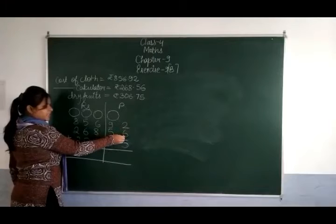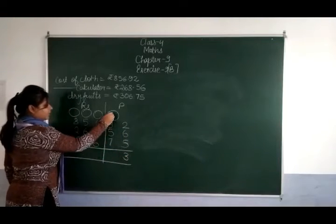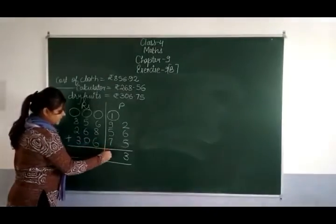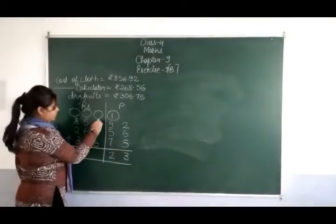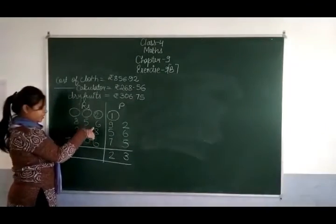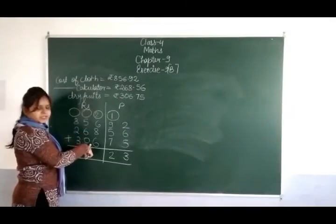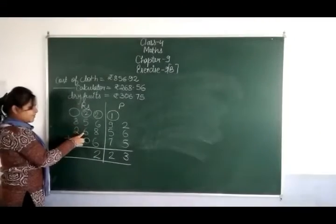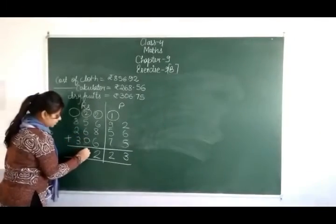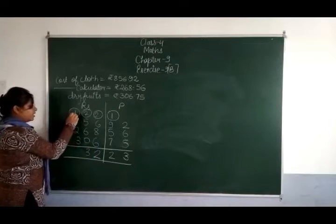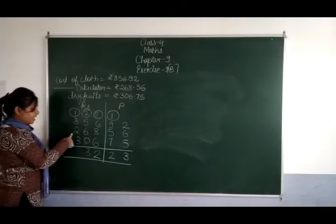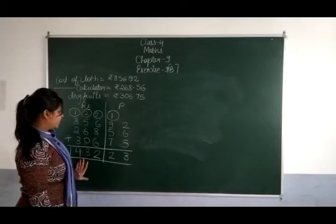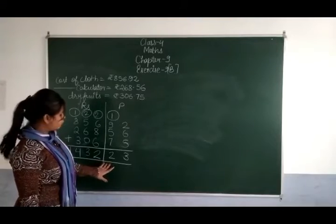2 plus 6 is 8. 8 plus 5 is 13 — write 3, carry 1. 1 plus 9 is 10. 10 plus 5 is 15. 15 plus 7 is 20 — write 0, carry 2. 2 plus 6 is 8. 8 plus 8 is 16. 16 plus 6 is 22 — write 2, carry 2. 2 plus 5 is 7. 7 plus 6 is 13. 13 plus 0 is 13 — write 3, carry 1. 1 plus 8 is 9. 9 plus 2 is 11. 11 plus 3 is 14. So 1,432 rupees and 23 paise.